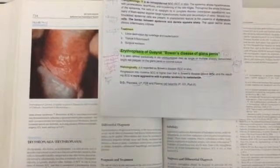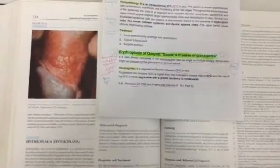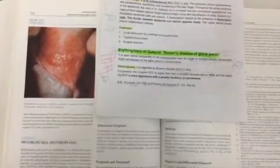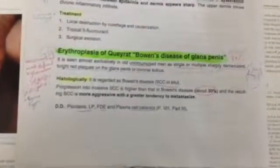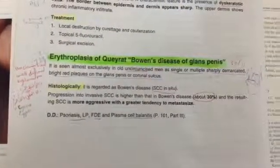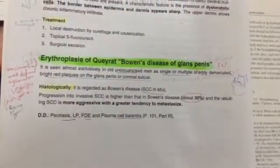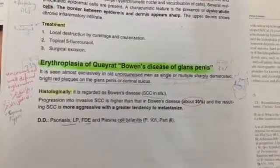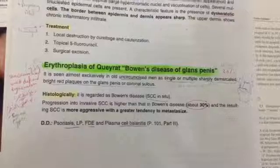It is usually in uncircumcised men, well-defined erythematous, sometimes with sandpaper appearance on the red erythematous plaque. Histologically regarded as Bowen's disease squamous cell carcinoma in situ, progression into squamous cell carcinoma is higher than Bowen's disease, 30%, and the resulting squamous cell carcinoma is more aggressive with greater tendency to metastasize.